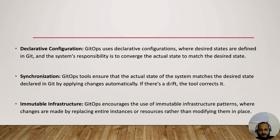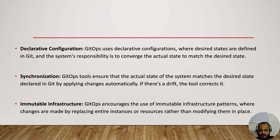GitOps uses declarative configuration, where desired states are defined in Git and it is the system's responsibility to converge the actual state to match the desired state. Similar to Terraform's concept of desired state vs. actual state — whatever configuration you have in your Git, the same resources or infrastructure will be created as per that defined configuration.